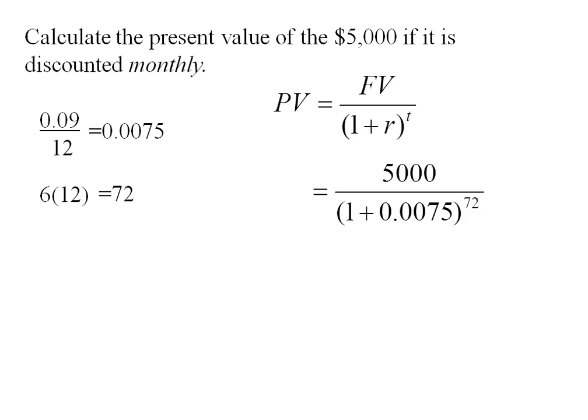So those will be the values I plug into my formula. That 5,000 remains the same, but now I'm discounting monthly, giving me a present value of $2,919.62.